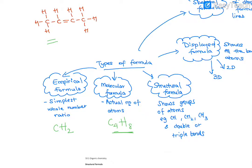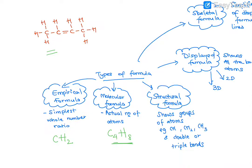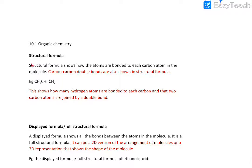The structural formula shows the groups of atoms. It usually shows CH3, CH2, or CH groups of atoms, and double bonds or triple bonds are also shown. So the structural formula shows how the atoms are bonded to each carbon atom in the molecule. It shows how many hydrogen atoms are bonded to each carbon, and that two carbons can be joined by a double bond.